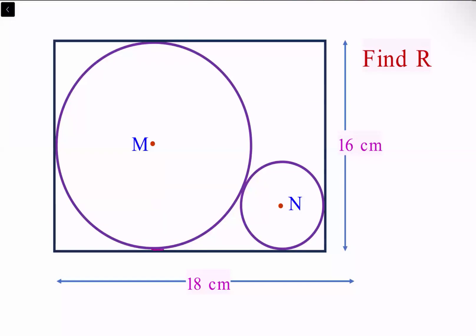In today's question we are given a rectangle with length 18 centimeters and width 16 centimeters. Inside we have two circles touching the sides as shown, and we have to find the radius of the smaller circle.